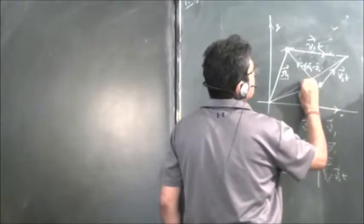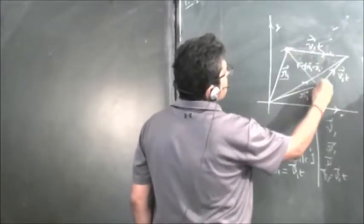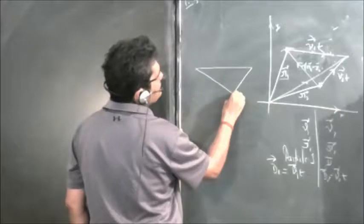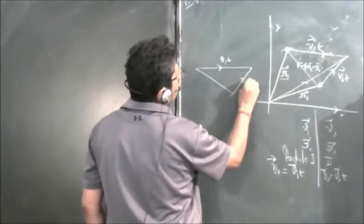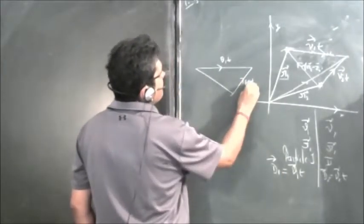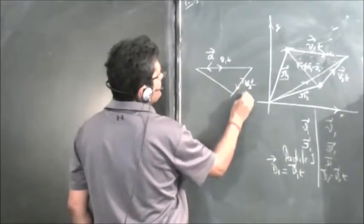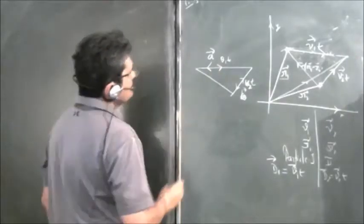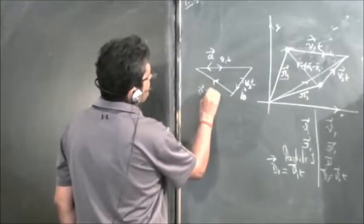It is a simple problem using the vector method. Looking at the triangle and joining the points, we look at the velocity vector diagram. This one is v1·t in this direction and v2·t in another direction. Let us write in terms of vectors a and b. Drawing it out, this vector in this direction will be vector a minus vector b.